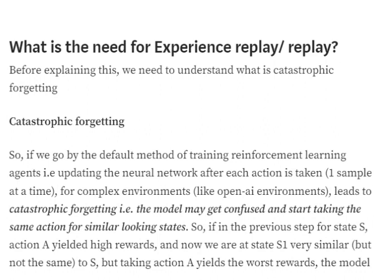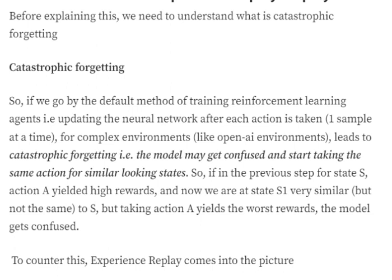What is the need for experience replay? First, we need to understand catastrophic forgetting. When training a reinforcement learning agent in the usual flow — take action, get reward, provide feedback, repeat — we train the network one sample at a time. For complex networks, this can lead to catastrophic forgetting: the model might get confused and start taking similar actions for similar-looking states, which can lead to very bad rewards. For example, at state S you take action A and get great rewards. Then at a very similar state S1, the model takes the same action A, which yields bad rewards.